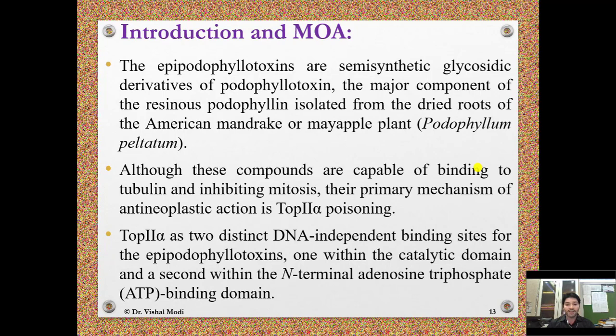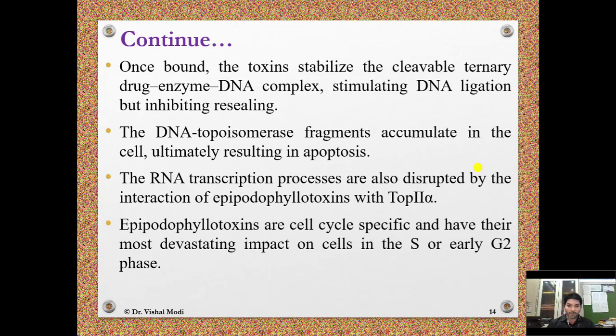Topoisomerase 2 alpha has two distinct DNA-independent binding sites for epipodophyllotoxins: one within the catalytic domain and a second within the N-terminal adenosine triphosphate binding domain. Once bound, the toxin stabilizes the cleavable ternary drug-enzyme-DNA complex, stimulating DNA ligation but inhibiting resealing. DNA-topoisomerase fragments accumulate in the cell, ultimately resulting in apoptosis. RNA transcription is also disrupted. Epipodophyllotoxins are cell-cycle specific, with greatest impact on cells in S-phase or early G2 phase.